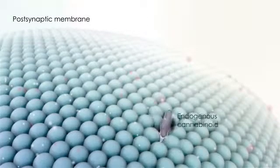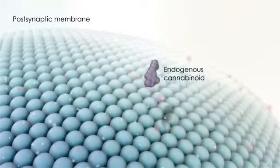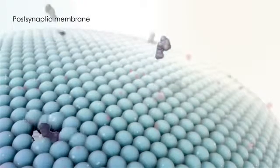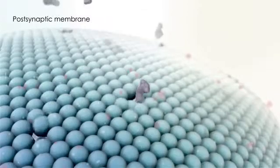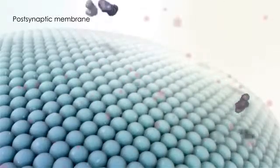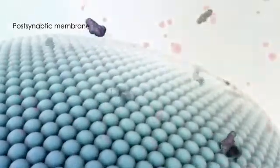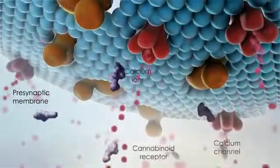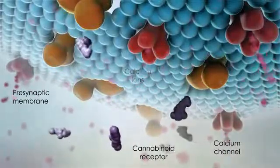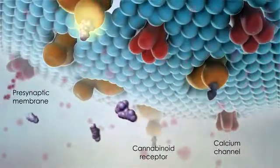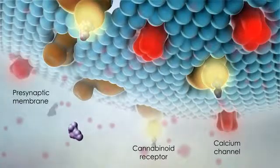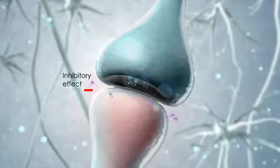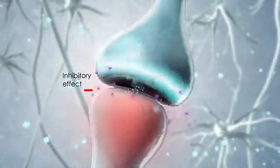Endogenous cannabinoids are synthesized on demand from the phospholipid bilayer of the postsynaptic membrane. These lipophilic ligands are released directly into the synaptic cleft and act in retrograde fashion on the presynaptic neuron where the cannabinoid receptors are expressed. Binding of the endogenous cannabinoids affects intracellular signal transduction pathways, reducing the influx of calcium ions into the presynaptic neuron, causing a decrease in further neurotransmitter release.